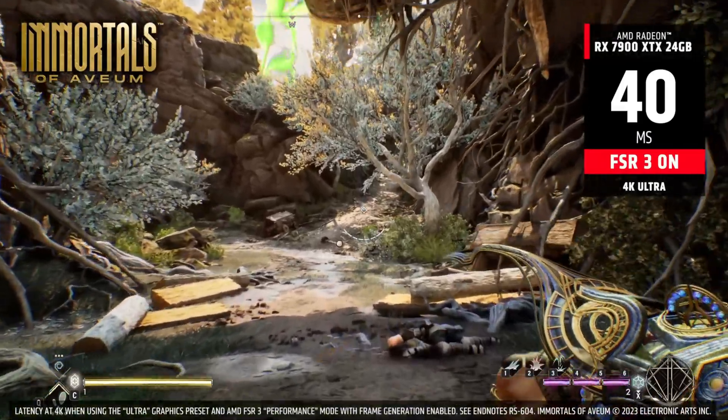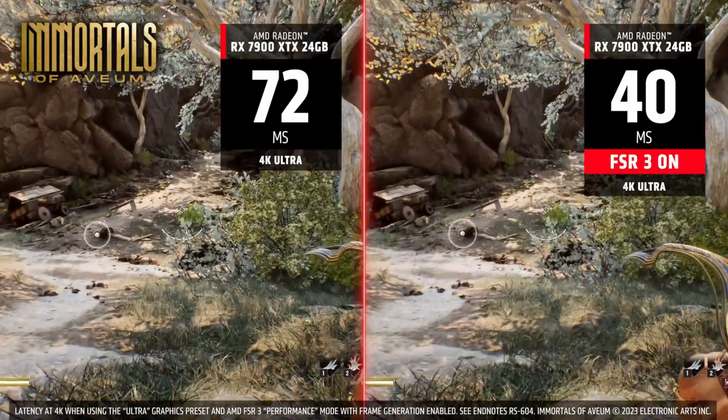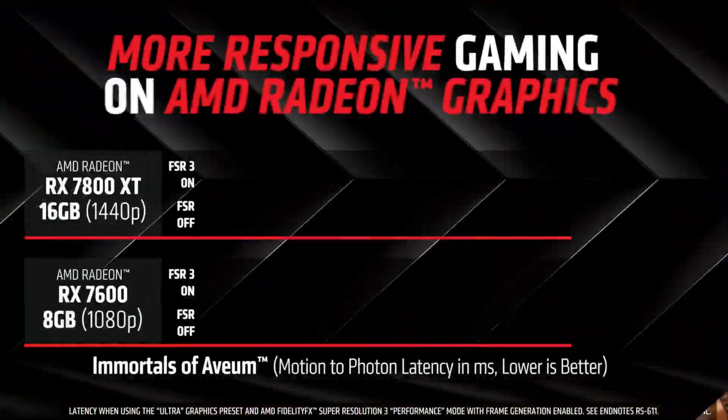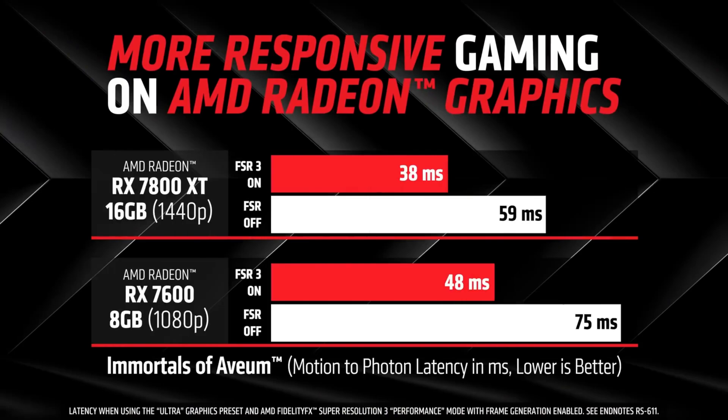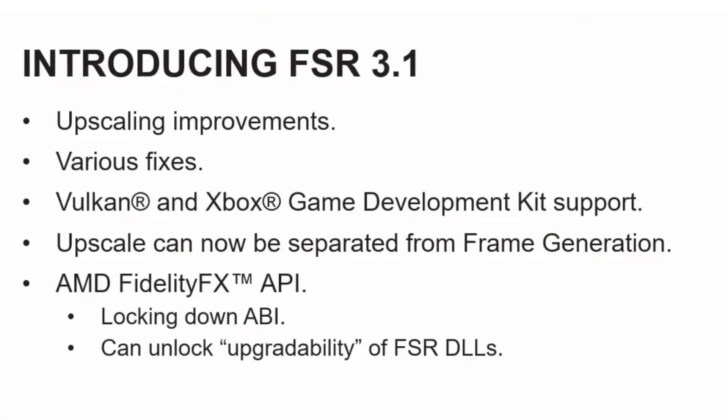This new version of FSR 3 is kind of cool because it brings a couple of interesting things that will improve image quality on Xbox. As you can see from the official slide, we've got FSR 3.1, which brings upscaling improvements and various other fixes, as well as Vulkan and Xbox Game Development Kit support. That's great news for Xbox Series S and X users and developers.